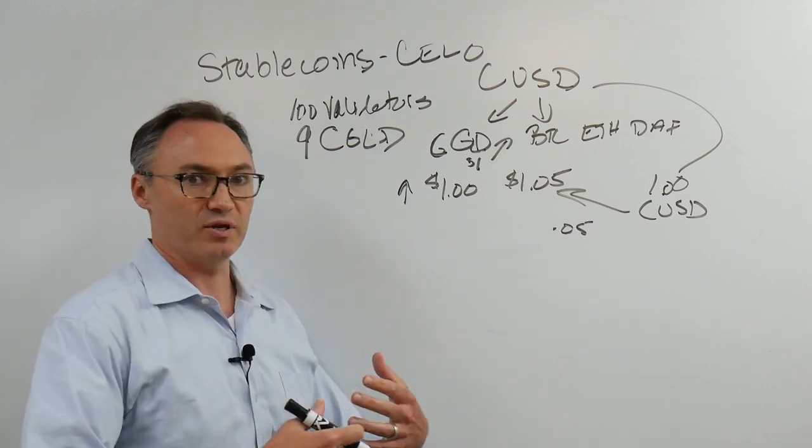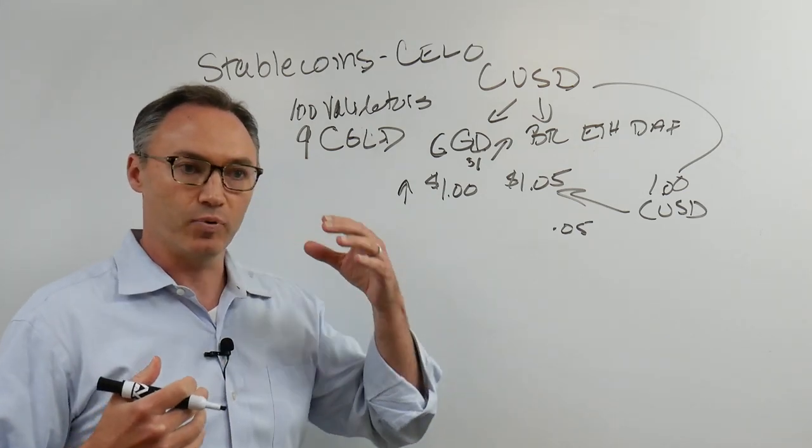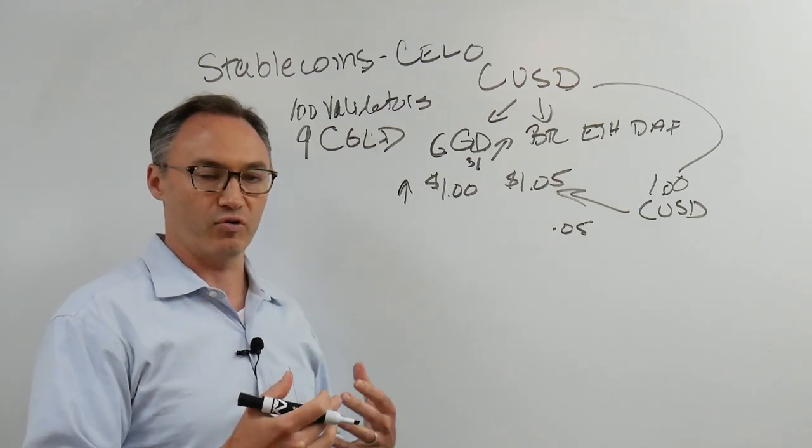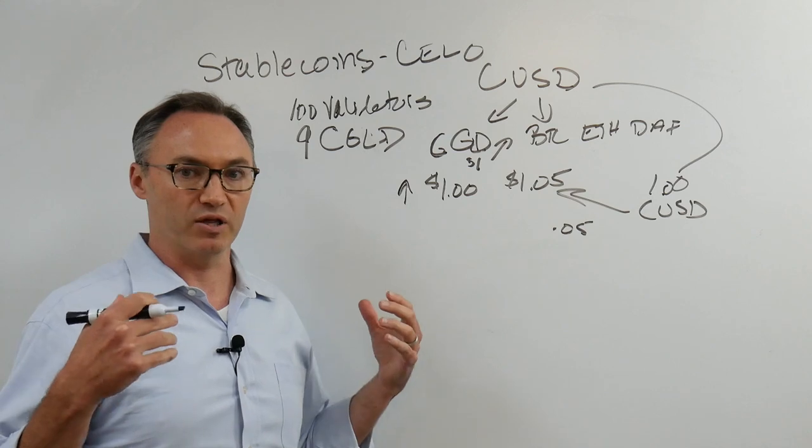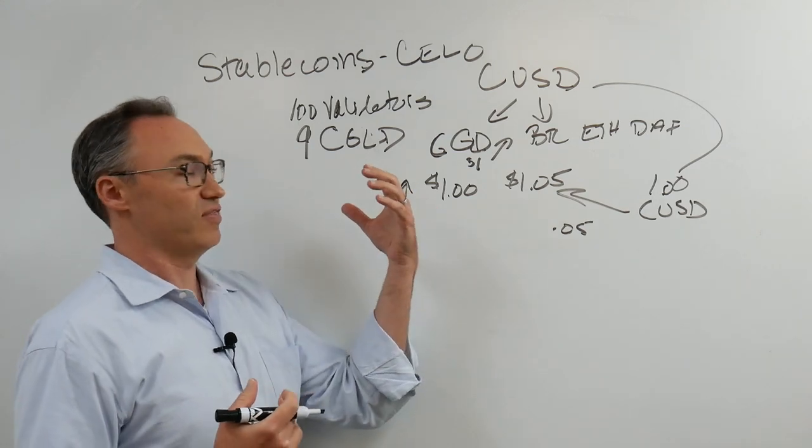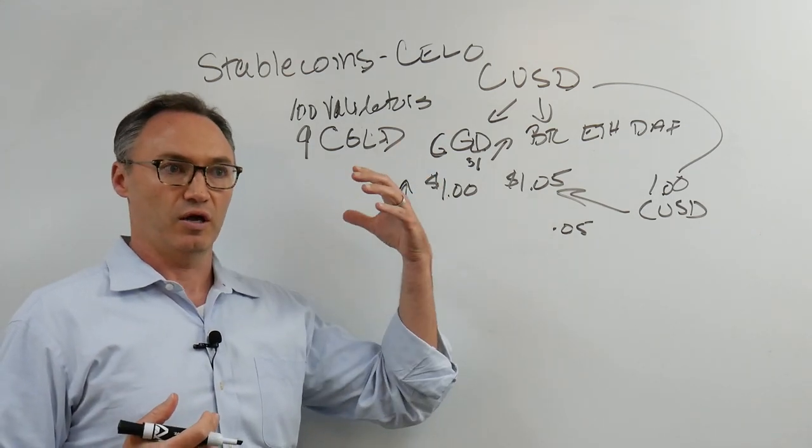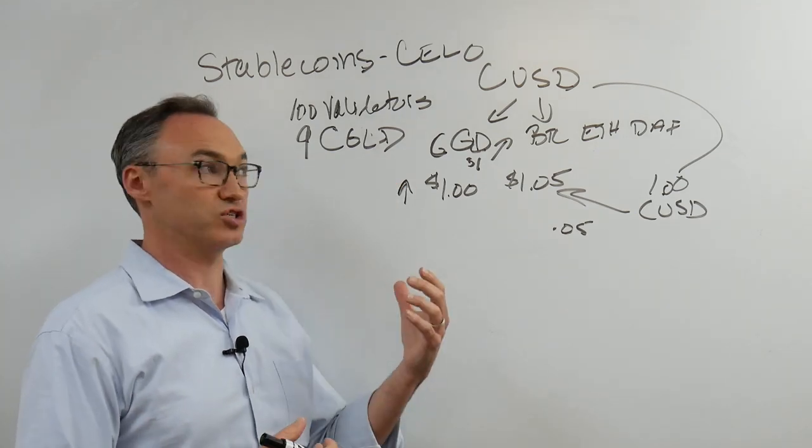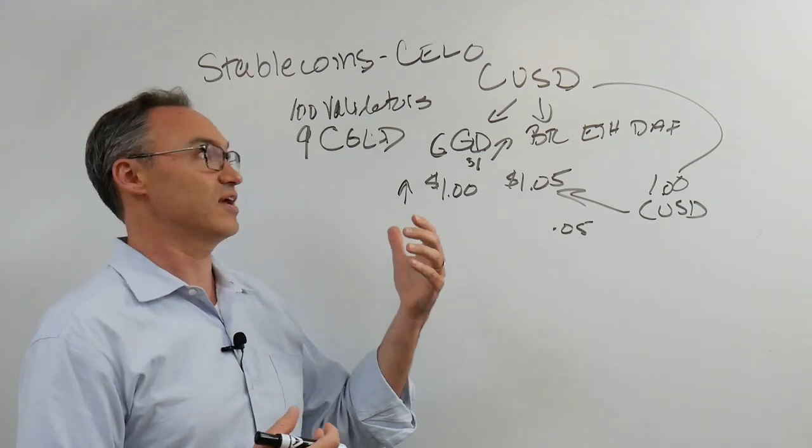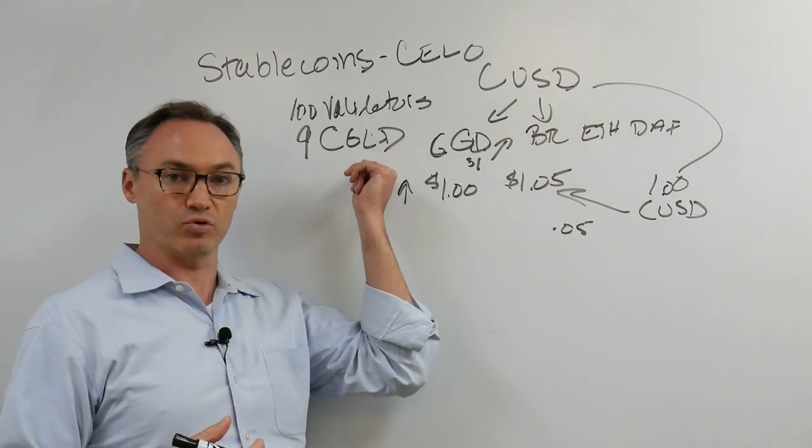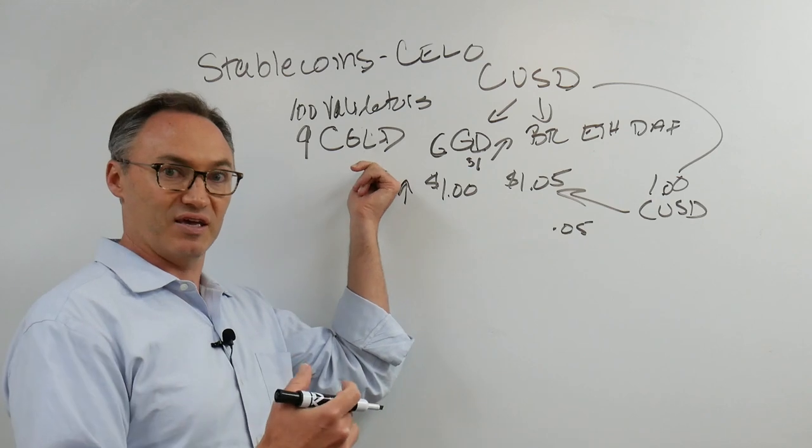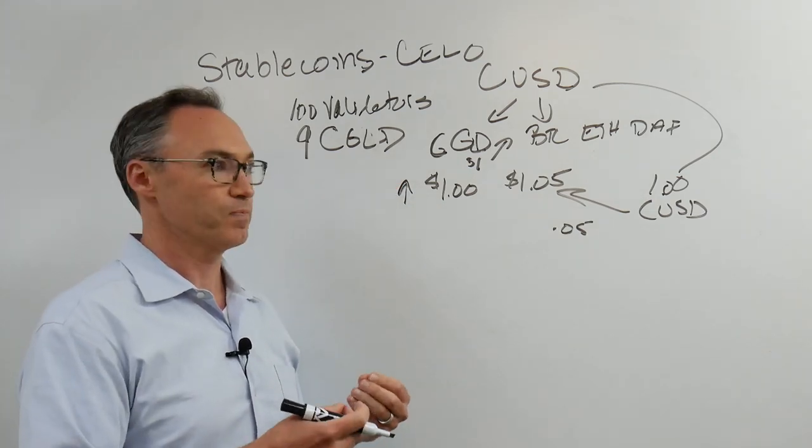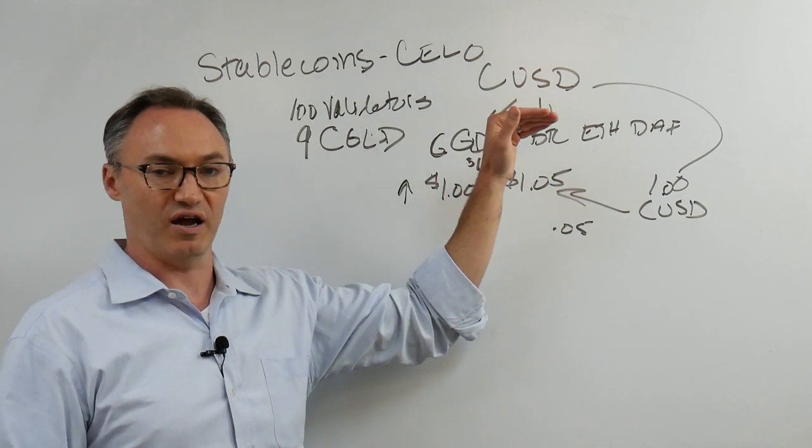So that is a little bit about CUSD. The important thing is they've built their own network. This is not on Ethereum or Bitcoin or one of the other public blockchains. This is where they are deciding who the validators are. The validators are getting paid, and they also have to stake. If they act maliciously, the validators can have their Celo gold burned.